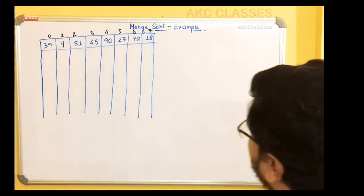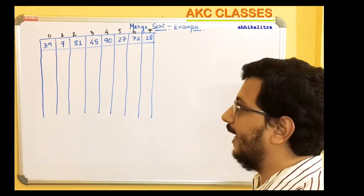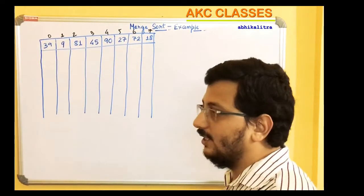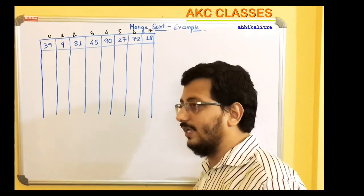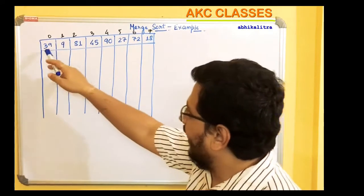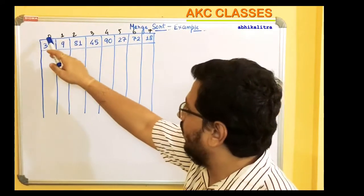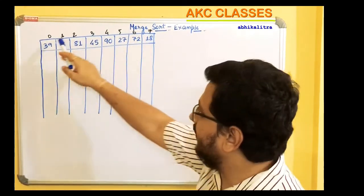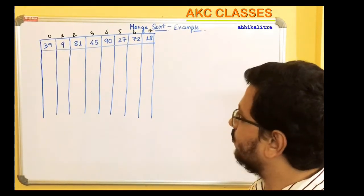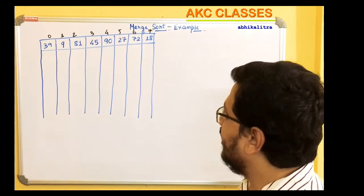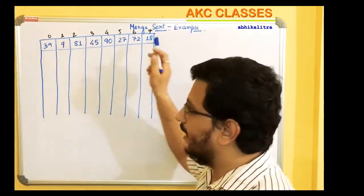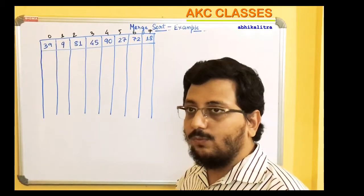Let's take a look at this example. We have a total of 8 different elements. These elements are not sorted and they are sorted using merge sort. We have written the corresponding indices in black ink.